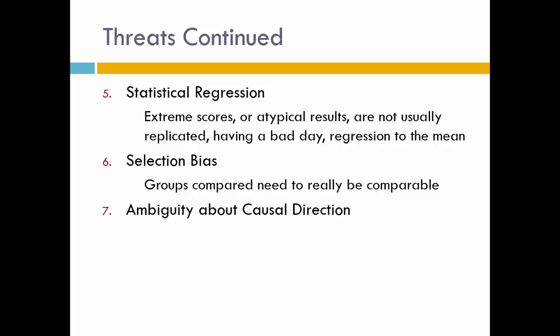Number five is statistical regression. Extreme scores are atypical and usually not replicated — you could be having a really bad day and score poorly on a test, but that doesn't mean you'll score poorly every day. We call this regression to the mean, which means people who score really well or really poorly on a test usually score much closer to the average the next time. You want to keep that in mind.